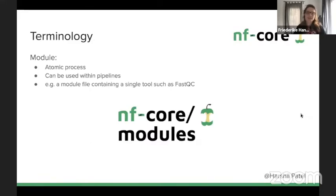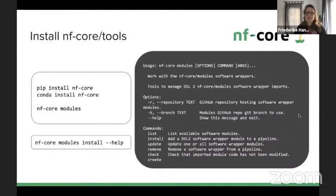A module usually contains a single software tool like FastQC, for example, and it can be used within a pipeline and also shared between different pipelines. To make use of the sharing, there's the NF-core modules repository on GitHub where you can find many of these modules already. To interact with this modules repository, there's an existing subcommand in the NF-core tools. You can install it with pip and Conda, and if you run NF-core modules, you get a list of subcommands.